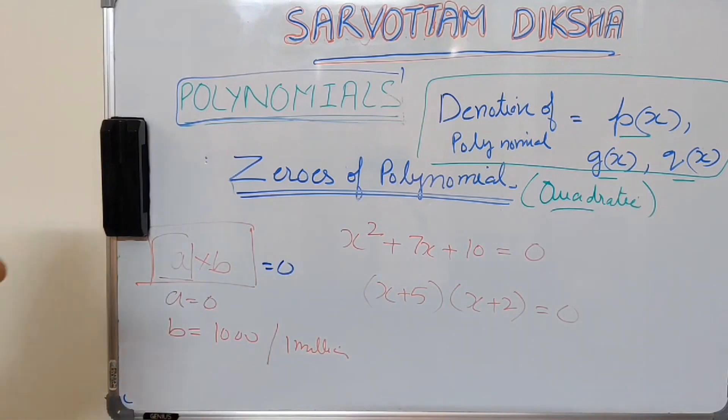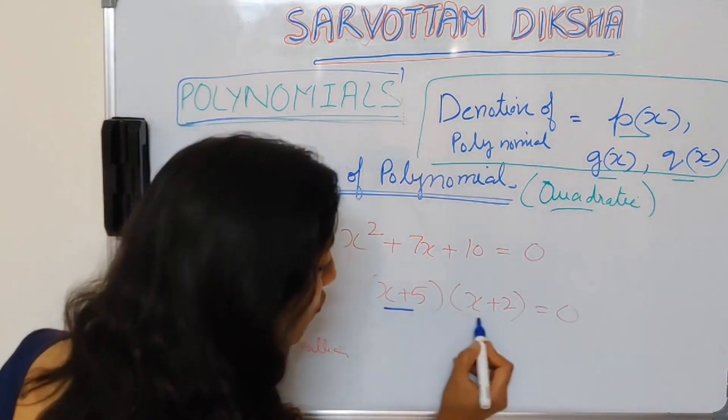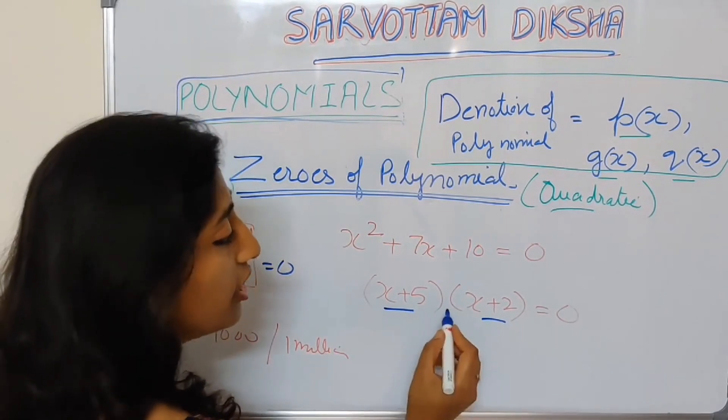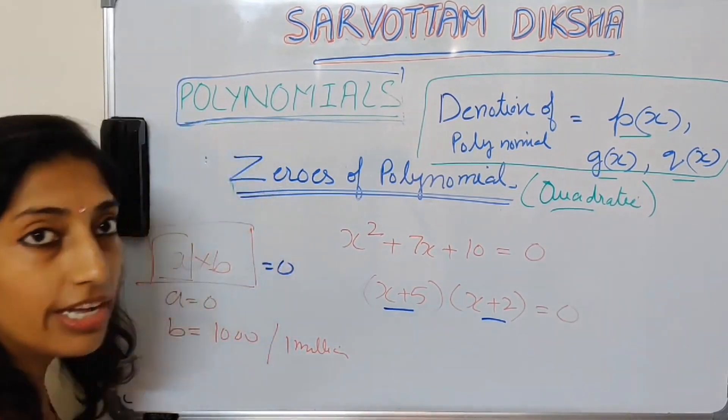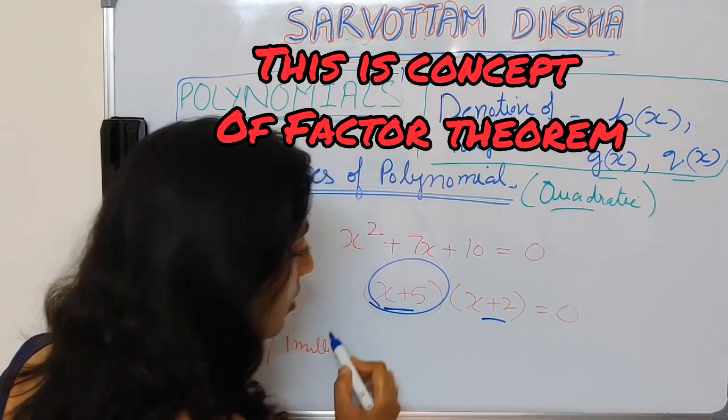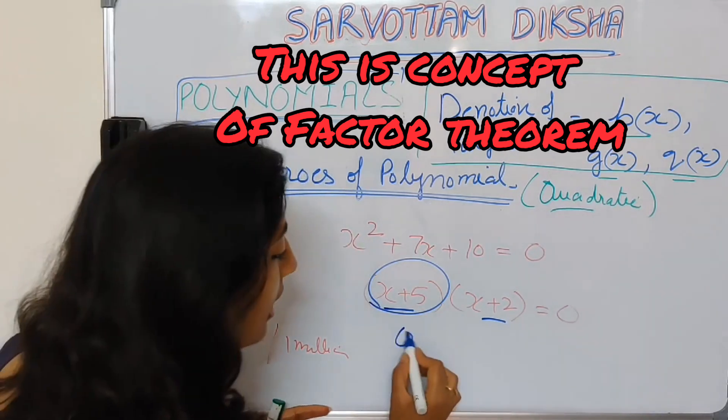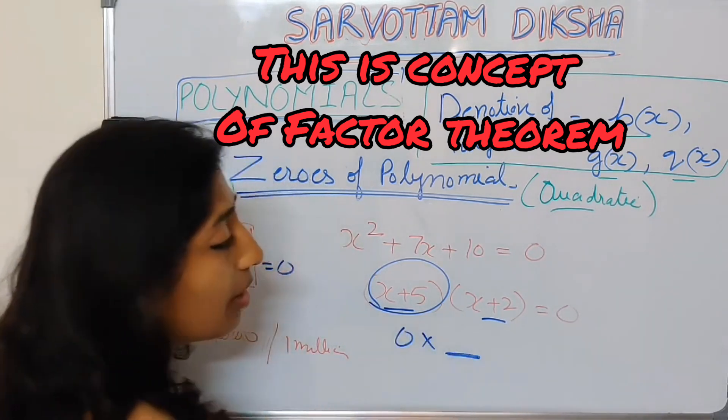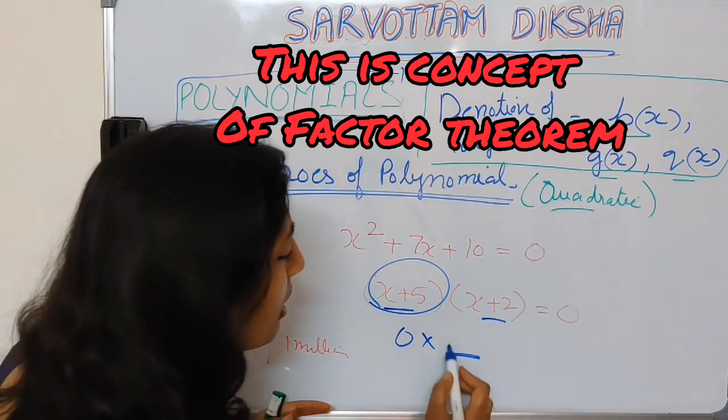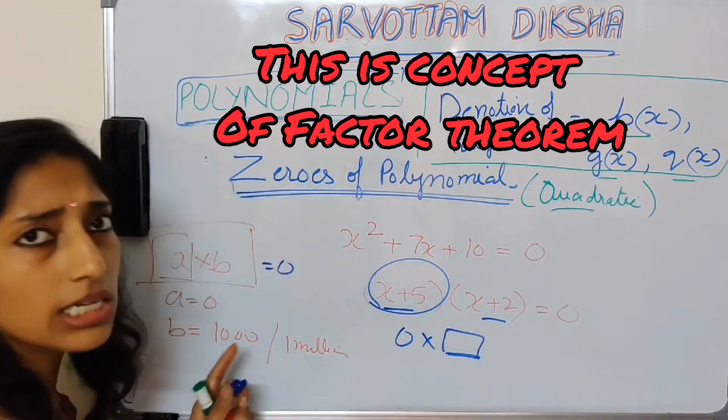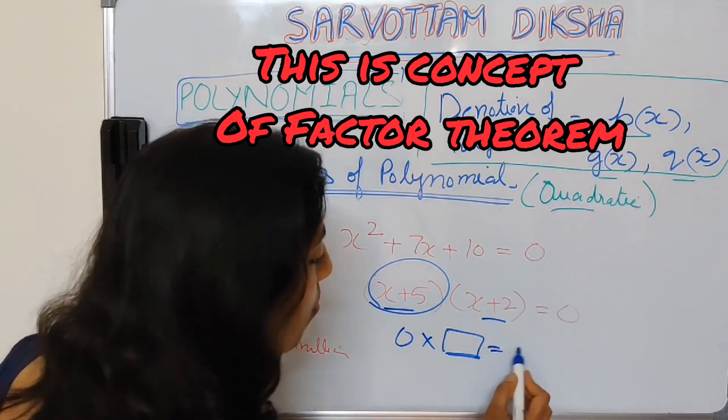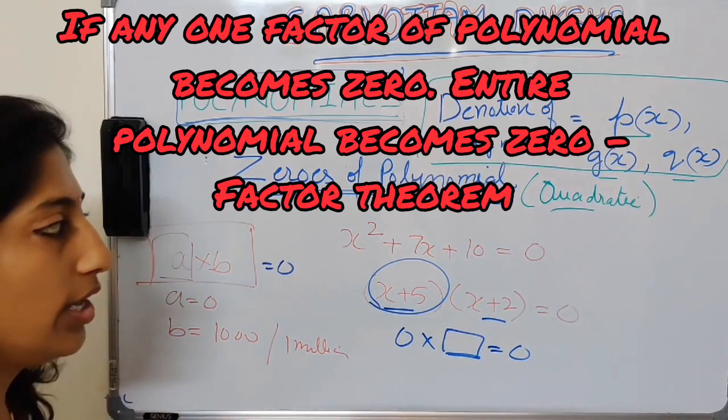Same way, I have two factors here: (x plus 5) into (x plus 2). Whenever one of the factors becomes 0, the entire thing will become 0. Whatever be the value of your second factor doesn't matter. This is bound to be 0 only.